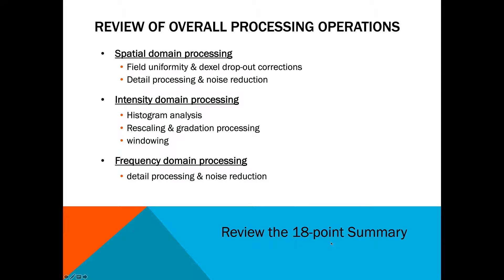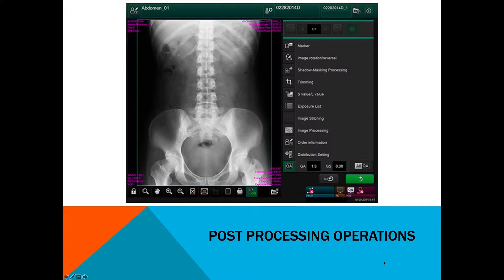Definitely recommend reading the chapter summary. This image shows post-processing examples, including image stitching, S values, shadow mask processing, and image rotation and reversal — just things you're familiar with.